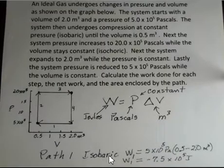Path 1 is isobaric constant pressure, so it's allowed to use this formula. Work equals pressure times change in volume. We put in the pressure value. The final volume is 0.5 cubic meters. We started at 2 cubic meters, so we end up with a negative work done here.